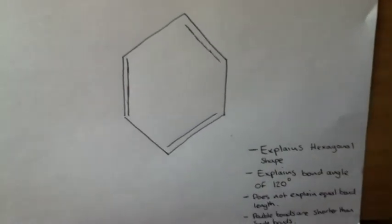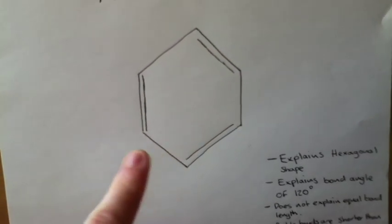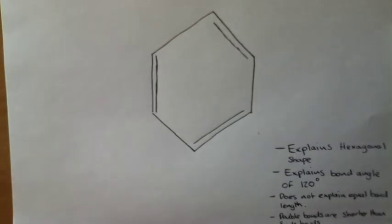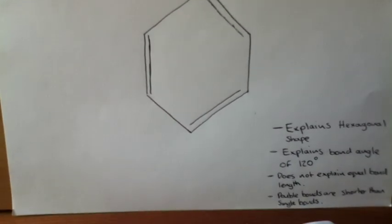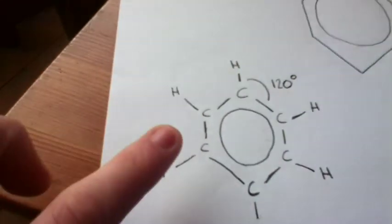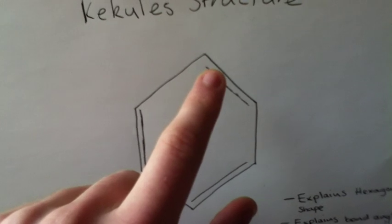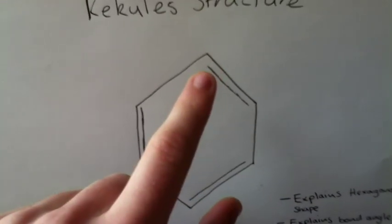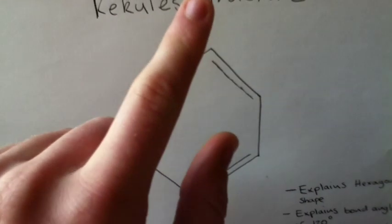So what Kekule's structure gives us is we do get the hexagonal shape, as shown here, and it also does account for the bond angle of 120 degrees, because like the modern one, we've got carbon atoms here which have three areas of electron density. We've got the double bond, we've got the single bond, and we've got the hydrogen atom coming up there.